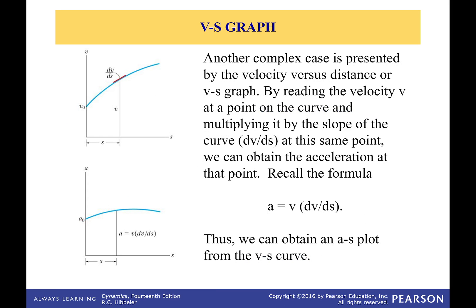And the last one we're going to talk about is the VS graph. So, and this one taking the area doesn't really give me anything, but the slope is valuable because I had that whole ADS is equal to VDV equation. If I divide both sides by DS, this cancels. I have acceleration is equal to this guy right here.